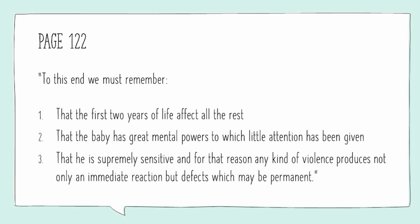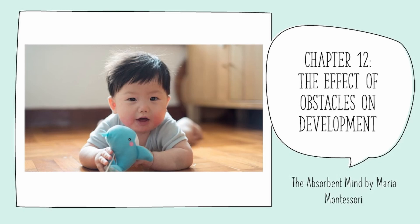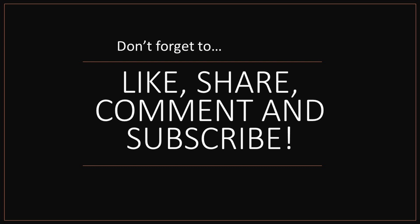To summarize what she said in this chapter, she says to this end we must remember these three things: one, that the first two years of life affect all the rest; two, that the baby has great mental powers to which little attention has been given; and three, that he is supremely sensitive, and for that reason any kind of violence produces not only an immediate reaction but defects which may be permanent. That is the summary of Chapter 12. Read Chapter 12 of The Absorbent Mind — we're going to get more into deviations as we go along in later chapters. If you liked what you heard, give it a thumbs up, like, share, comment, and subscribe.